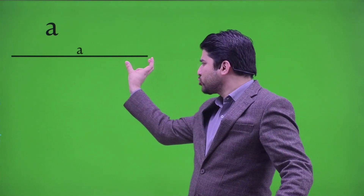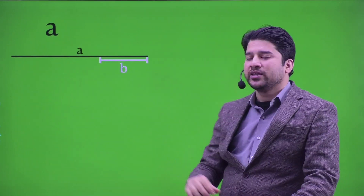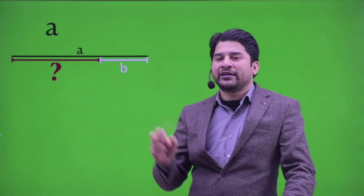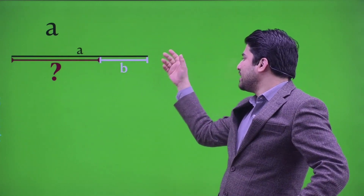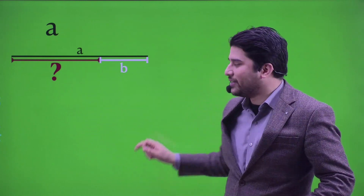I want you to visualize a line segment of length a, something like this. Now I want you to visualize a projection of small length, let's say b, over a, something like this. This black length is a and this white length is b. Now I want you to find the length of the remaining portion, which is being represented by the red line segment. This complete line segment is a and this is b, so definitely the red length represents a minus b.